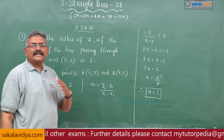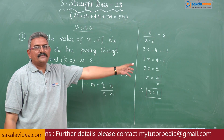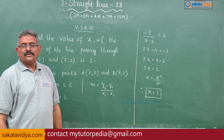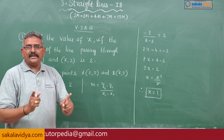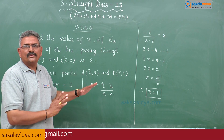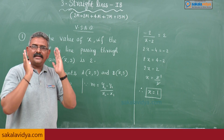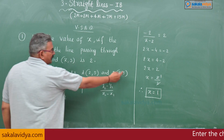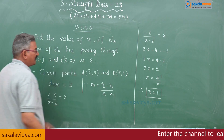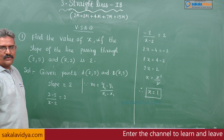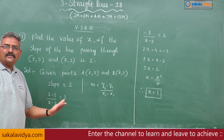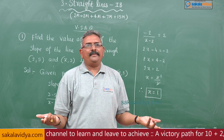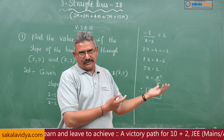In a regular examination you must follow all these steps; unless you follow the steps, marks will not be awarded. For board examinations you must follow the steps. For engineering entrance examinations, by inspection we can directly say: (3 − 5) / (x − 2) = 2 gives x = 1. By observation alone we can answer for engineering entrance examinations.